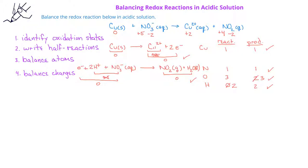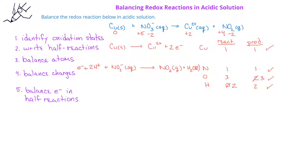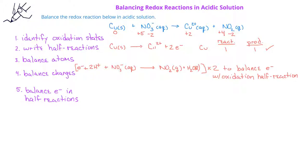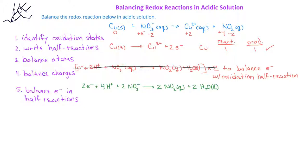Now we have to balance the electrons in the half reactions. Since the two half reactions have different numbers of electrons, we multiply the reduction half reaction by two to get the same number of electrons in both half reactions. Once we've done that, we can add the half reactions together. For the oxidation half reaction, we have Cu solid going to aqueous Cu²⁺ and two electrons. For the reduction half reaction, we have two electrons plus four hydrogen ions plus two aqueous nitrate ions producing two NO2 gas and two H2O liquid. When we add these together, the two electrons cancel since we have the same thing on both sides.